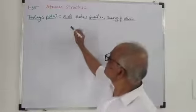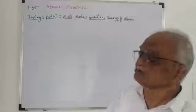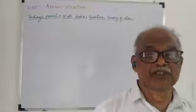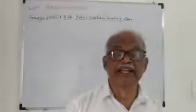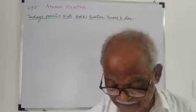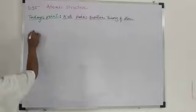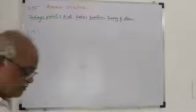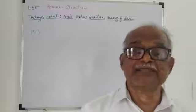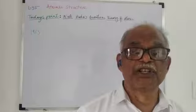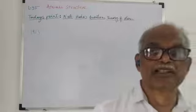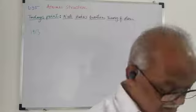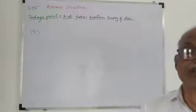Here we will discuss what is Niels Bohr's quantum theory for atomic structure. Niels Bohr in 1913 proposed his concept for the first time, and later on in the following ten years it was further refined in order to provide much better interpretation. This theory is based on certain assumptions.